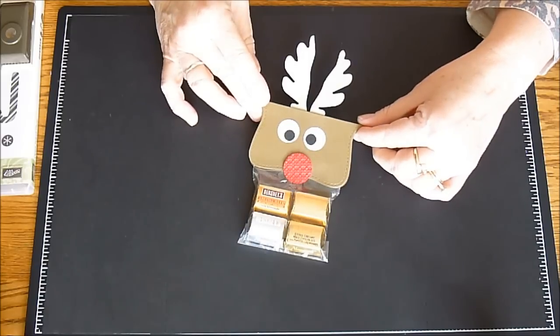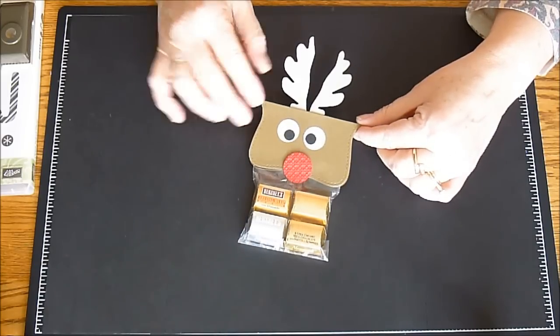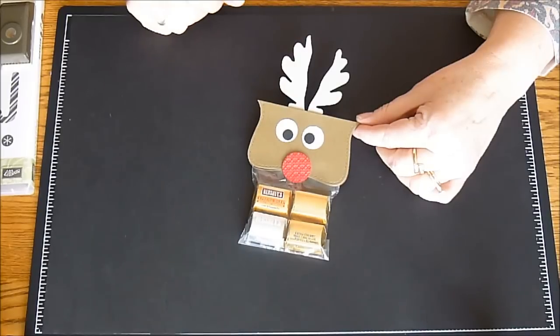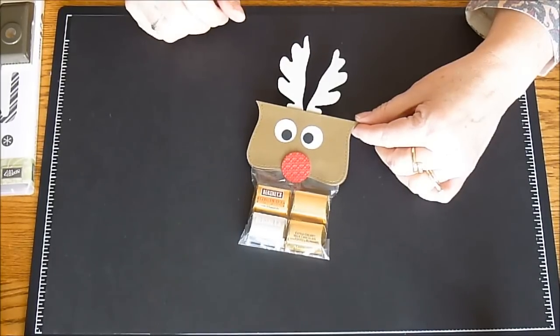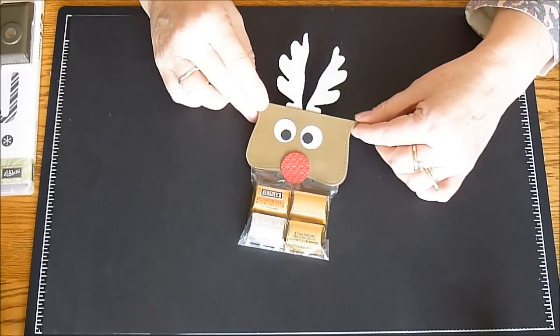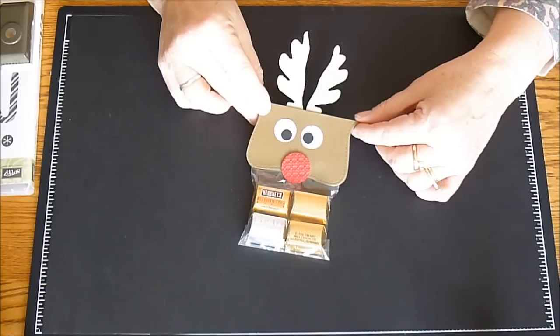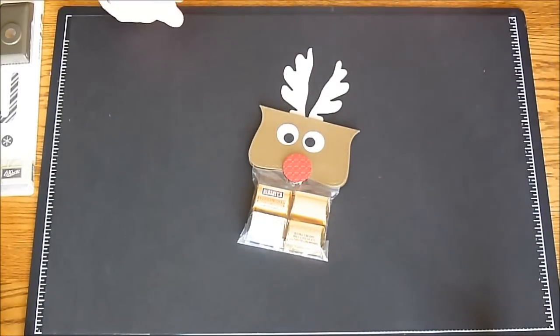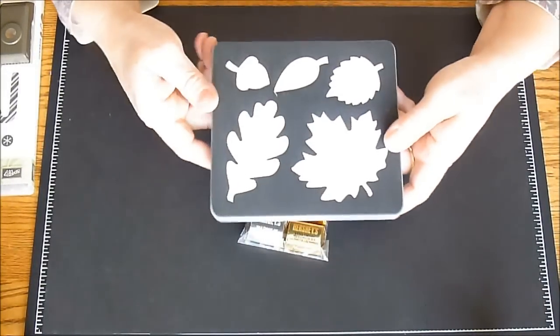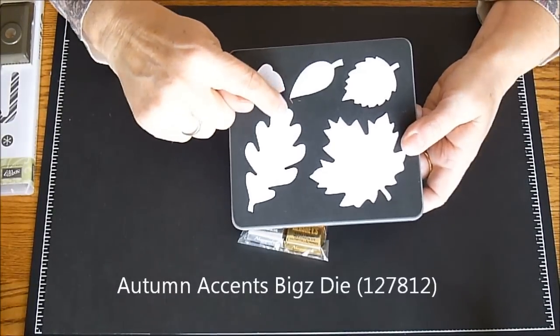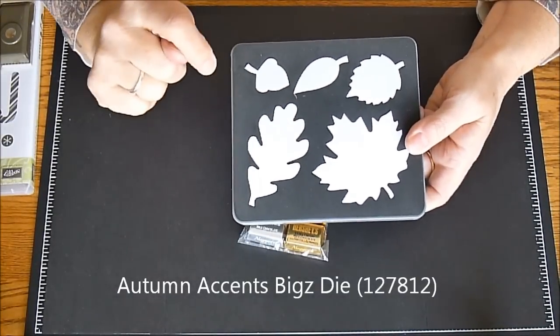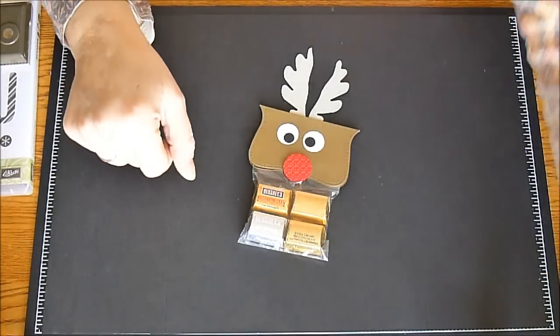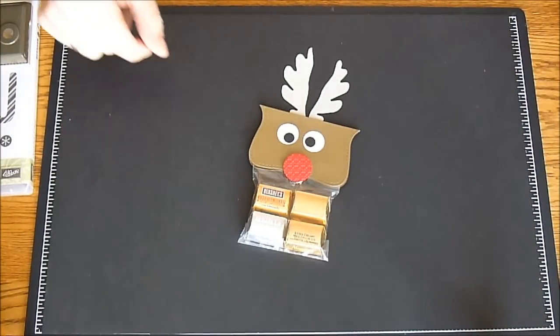So today I'm going to be showing this cute little reindeer topper and you've probably seen the little topper all over the web. However, I do believe how I've done the antlers was one of those very few original thoughts that I have and it all stemmed from what could I use that I already own. A lot of the things I'd seen on the web I didn't have, but I got to thinking this oak leaf on the autumn accents die from the holiday catalog would make perfect antlers. So we'll get started.